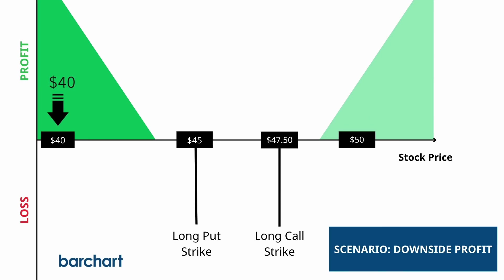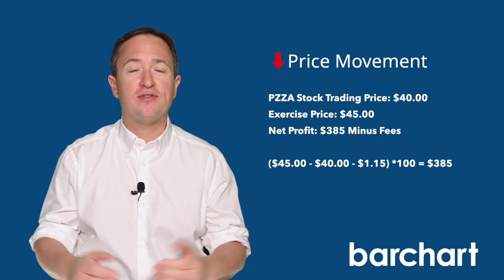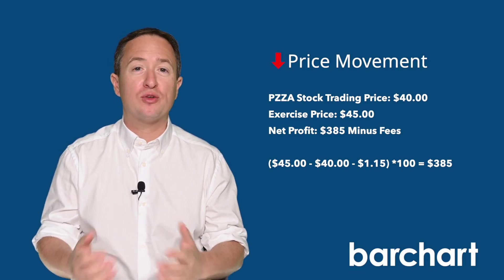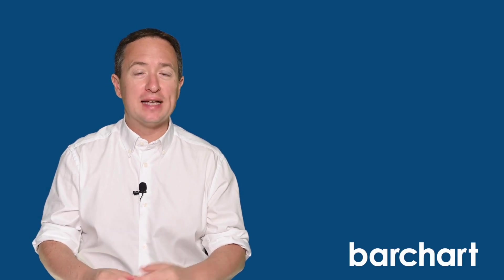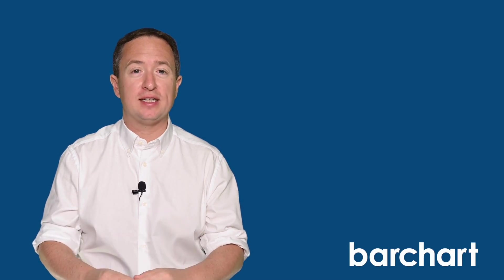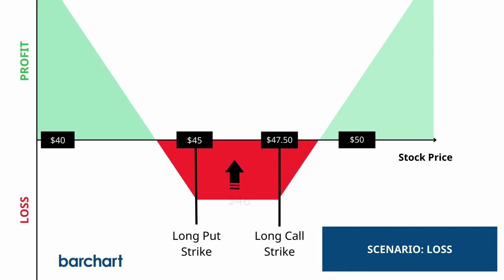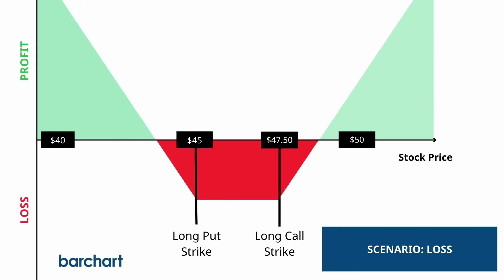If the price of Papa John's stock goes down to $40 instead, you have two options. If you own the stock, you can exercise the long put and sell 100 shares of Papa John's and collect $45 a share, giving you a net profit of $385 after the initial premium. But if you don't already own the shares, you can sell the long put as long as it hasn't expired yet. Like the call option, it might have some time value left, making it worth more than exercising it. However, if the price of Papa John's is at $46 at expiration, then both your call and put options are out of the money and expire worthless. Your loss is limited to the premium paid upfront — $1.15, or $115 per contract. As long as the underlying price stays between the strike prices, you will hit the maximum loss condition.